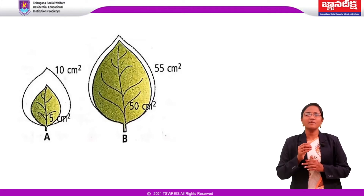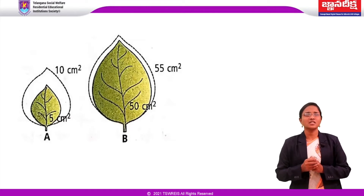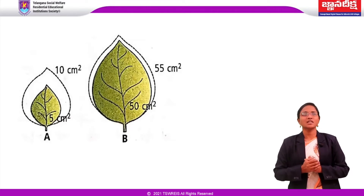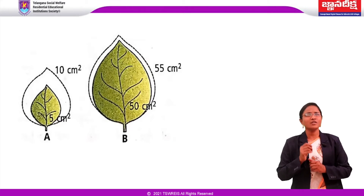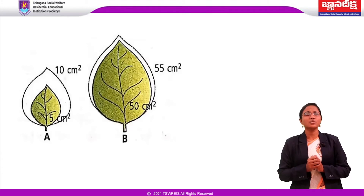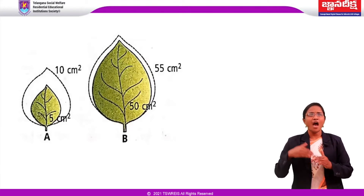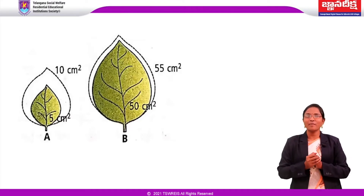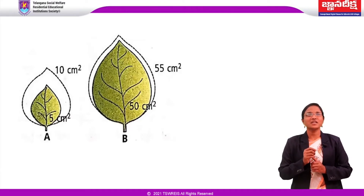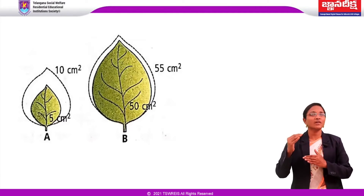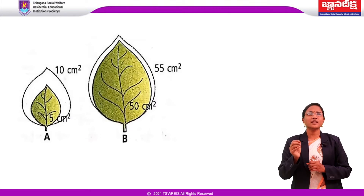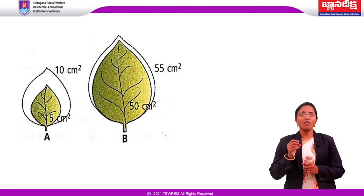Oxygen helps in releasing metabolic energy essential for growth activities. Nutrients also play an important role in plant growth. These nutrients are classified into macro and micro elements. Macro elements are required in large quantity for plant growth, and micronutrients are required in smaller quantities. These nutrients are used in the synthesis of protoplasm and act as a source of energy.